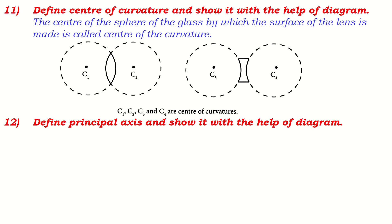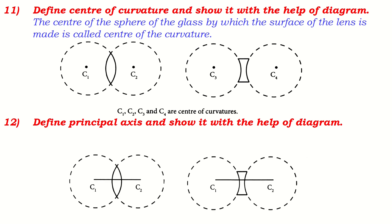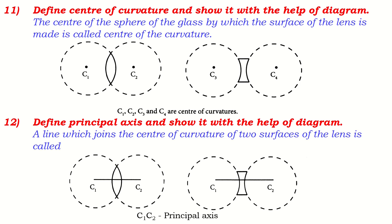Define principal axis and show it with a diagram. The difference from the previous diagram is that a line is drawn between the centers of curvature — that line is the principal axis. Here C1 and C2 are joined by the principal axis. A line which joins the centers of curvature of the two surfaces of the lens is called the principal axis of the lens.